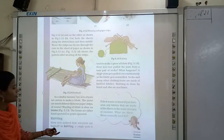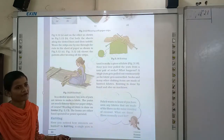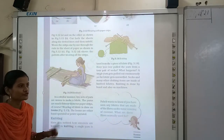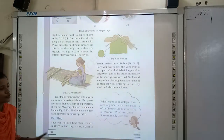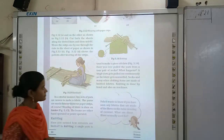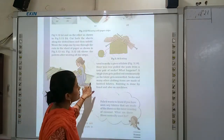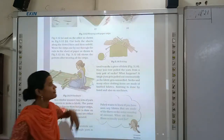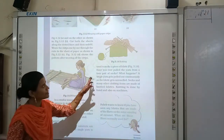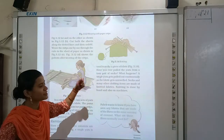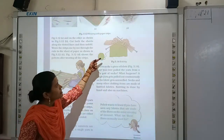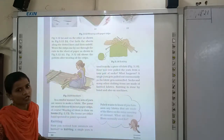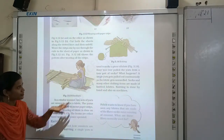In knitting, a single yarn is used to make a fabric. But in weaving, you use two sets of yarn to make a fabric. You can see in figure 3.14 — only one set of yarn is used. You can see the sweater; one set of yarn is used to make a sweater. So this is the process of knitting.